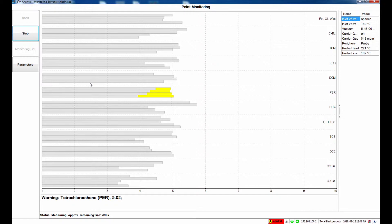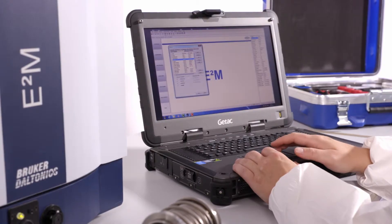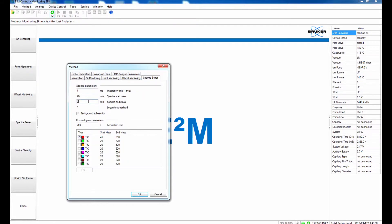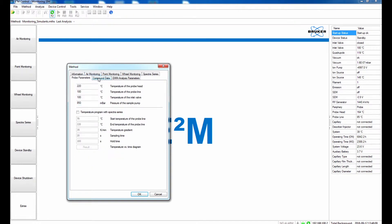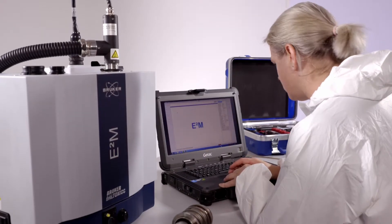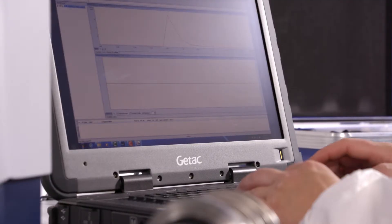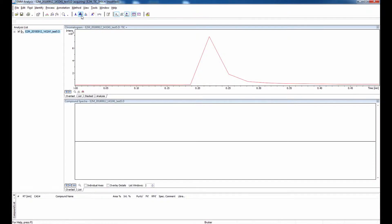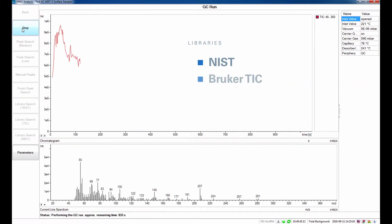The E2M is operated by two software modules for instrument control and data acquisition. The E2M control software is designed for advanced users, allowing all parameters of the instrument to be set and new applications to be created. Both software tools include fully automated data evaluation based on the National Institute of Standards and Technology Spectra Library and the Bluka Toxic Industrial Compound Library. Customer-specific libraries can also be used.